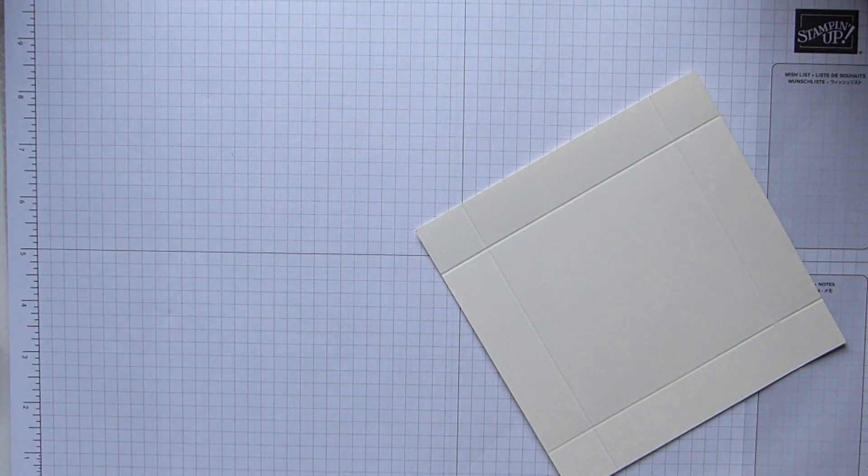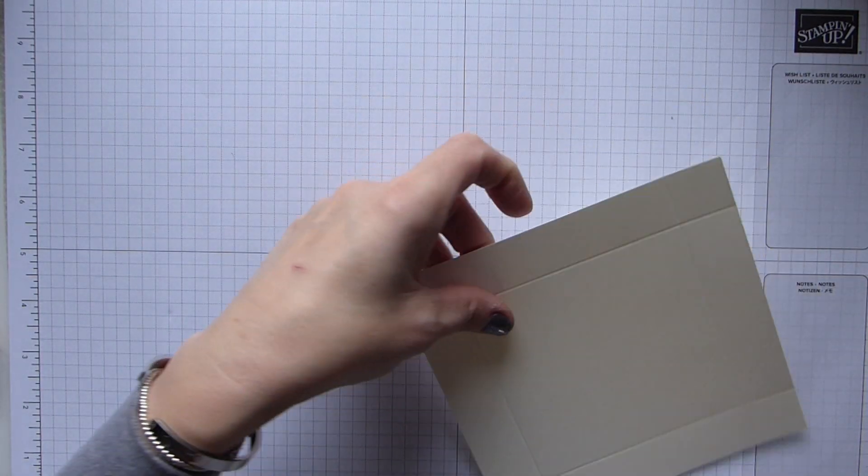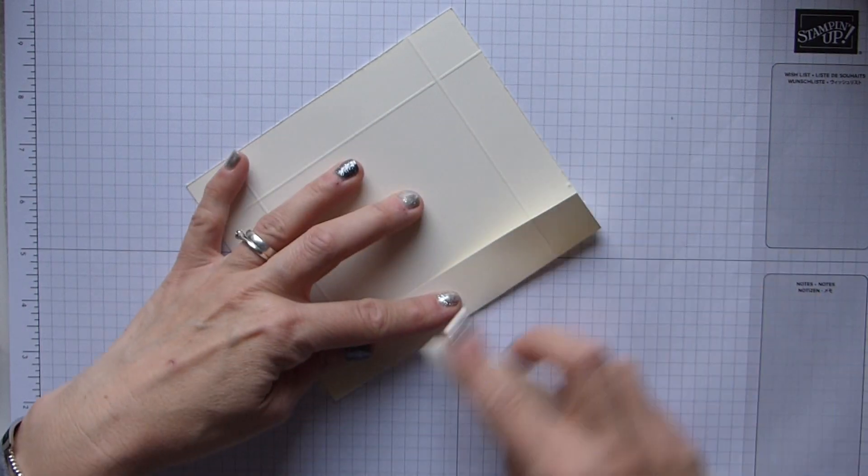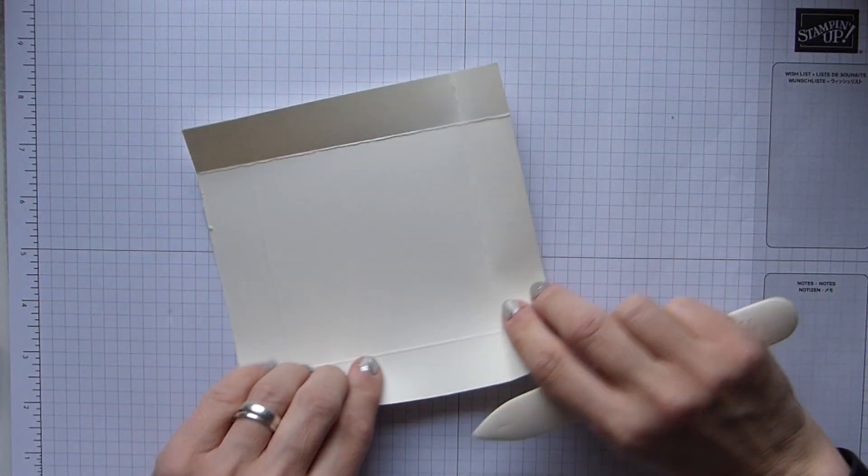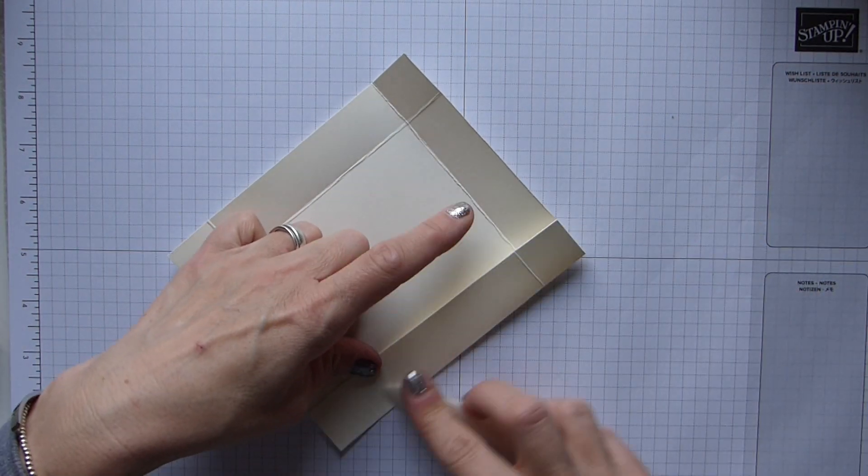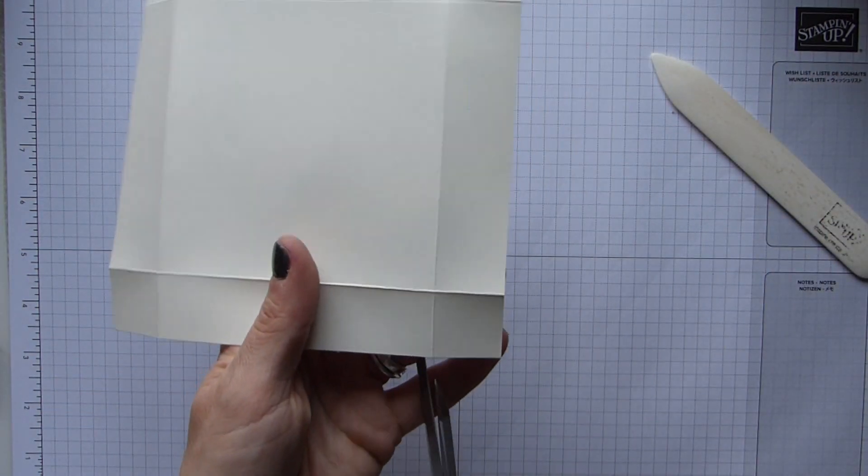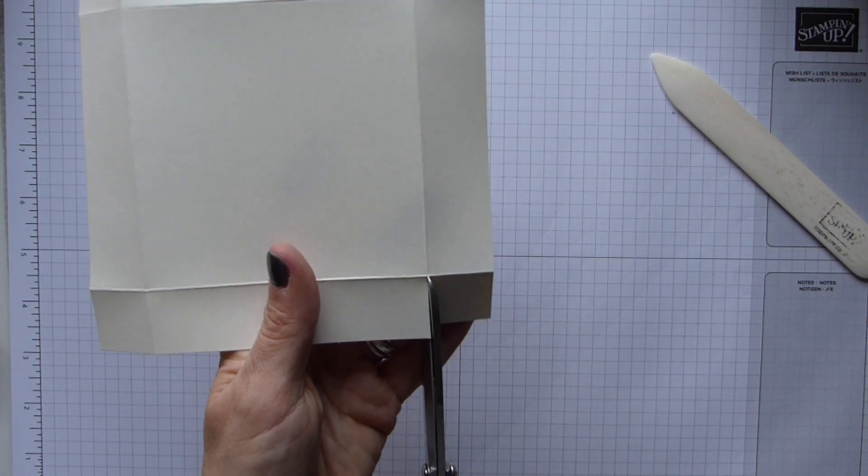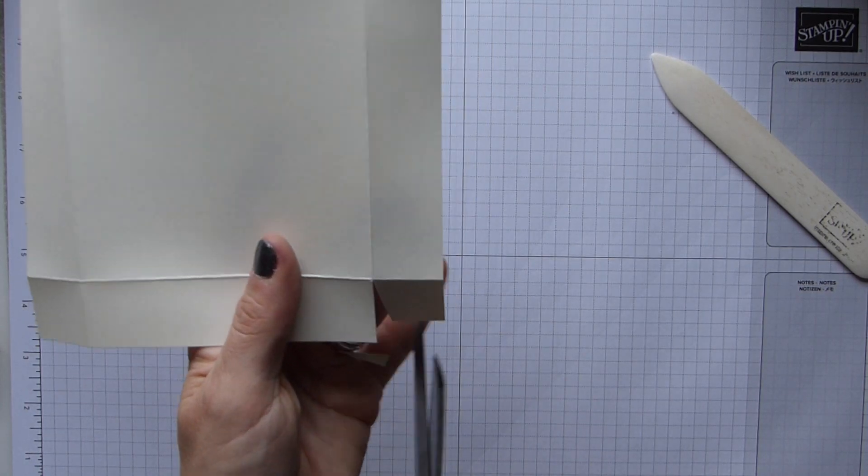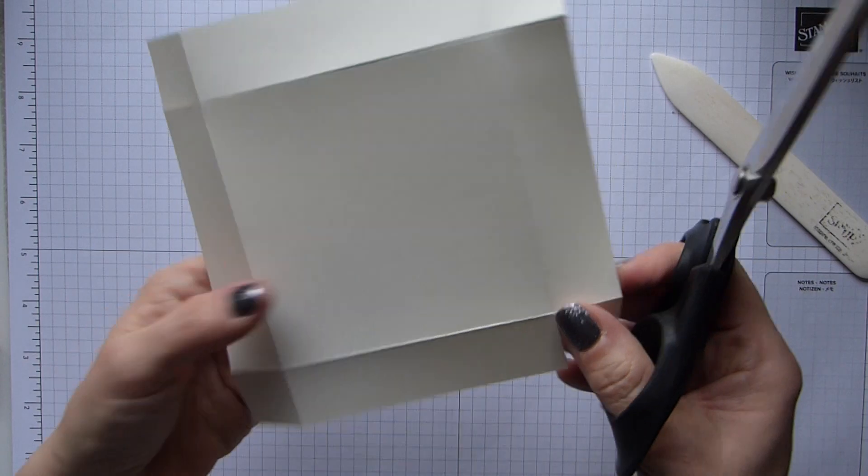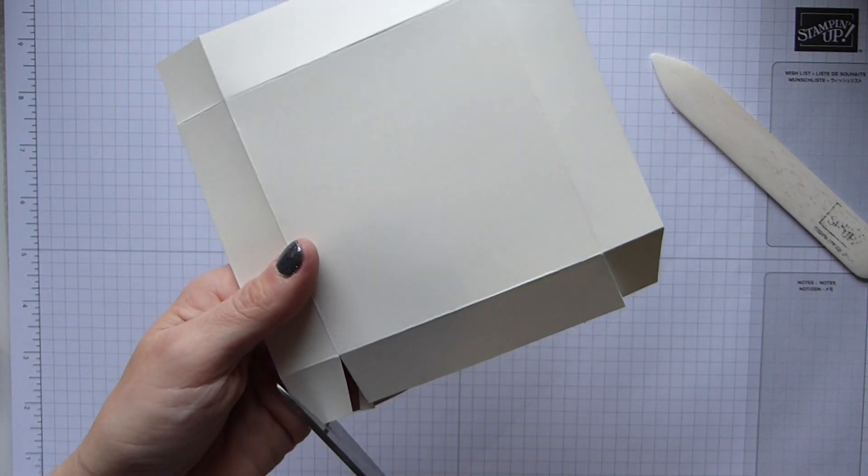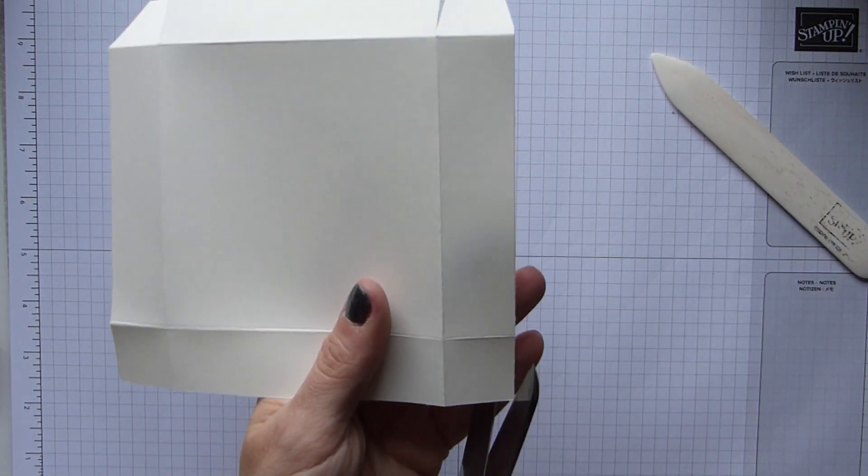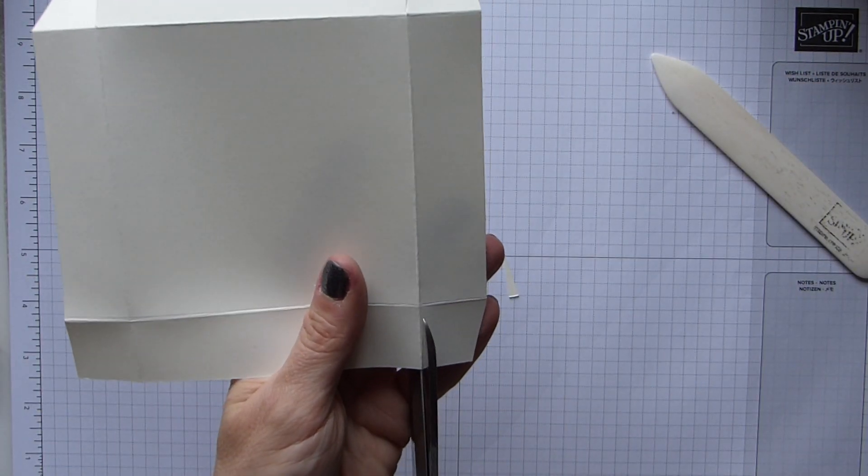So your lid, you will need a piece of cardstock that is six by six, which is in my notes 15 by 15 centimeters. And then we are going to score all four sides at one inch, which is 2.5 centimeters. Don't forget your shim, otherwise your lid won't fit properly. So one inch, four sides, 2.5 centimeters with a shim.